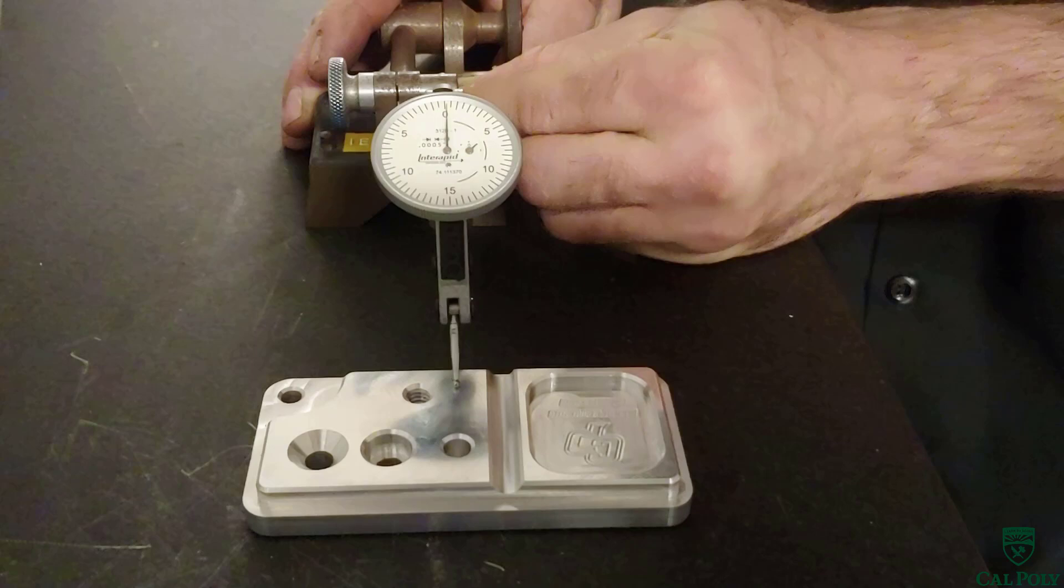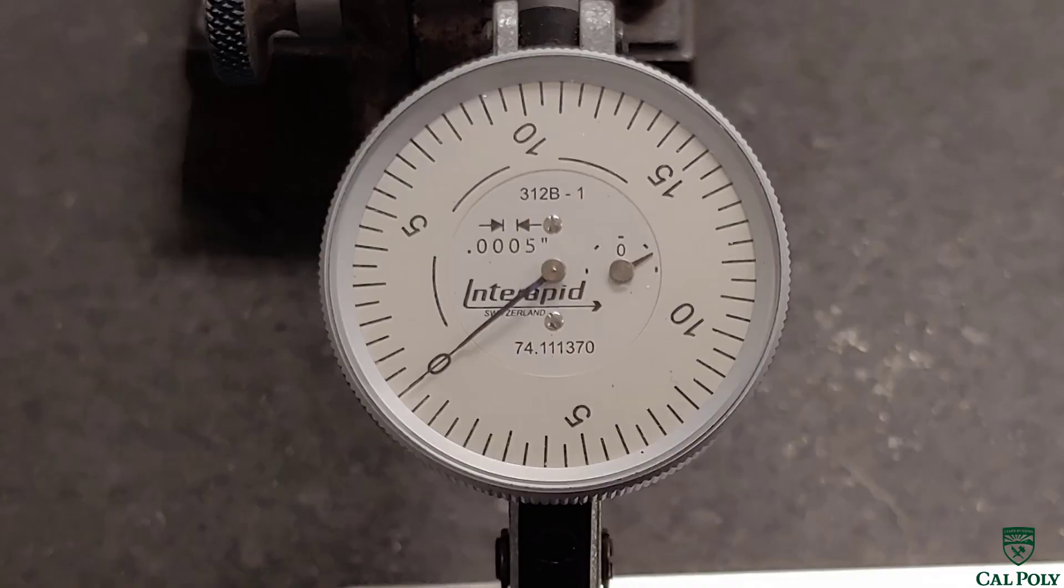In this photo we see our measuring tool. It is called a test indicator. The part is placed on a very flat piece of granite called a microflat table. This test indicator has a resolution of one half thousandth of an inch. This means that each graduation or line is 0.0005 inches.